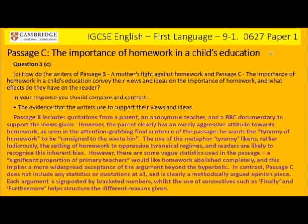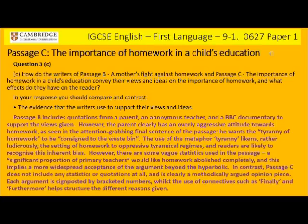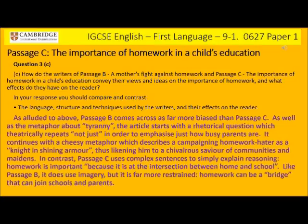Here's the second bullet point — press pause and read. When referring to evidence, you are likely to reference experts, statistics, quotations, or point out evidence of personal beliefs. Note how I question the vagueness of the statistics in passage B — 'a significant proportion of primary teachers' — thus building my own critical evaluation. And the final bullet point — press pause and read. Short quotations are clearly vital here so that you hone in precisely on specific differences in the language used within the two texts. There is far more bias and hyperbolic language in passage B, making it very easy to pull out soundbite-esque quotations. The tone of passage C is far more restrained and neutral.